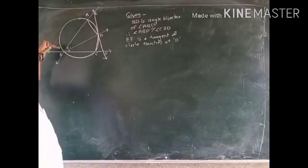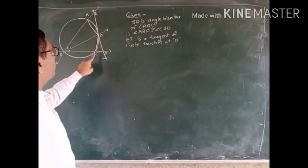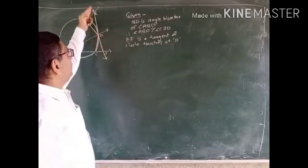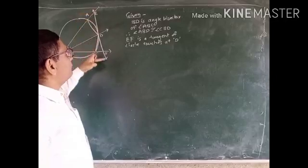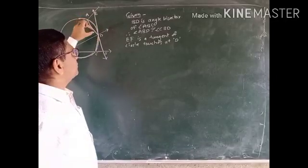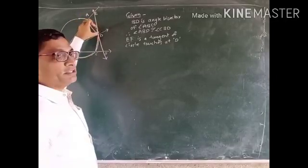That means angle ABD is congruent to angle CBD. Here, EF is a tangent which touches the circle at point D.